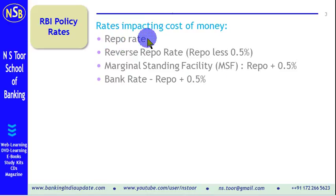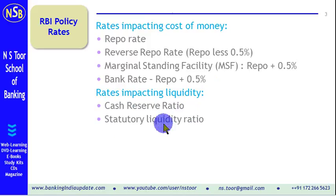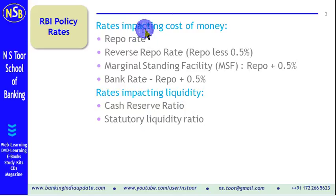So repo rate is the basic rate; reverse repo is repo minus 0.5%, and MSF and bank rate are both repo plus 0.5%. Liquidity is impacted by CRR and SLR. The rates of CRR and SLR are also changed by RBI according to requirement to impact the liquidity position. RBI keeps on changing these rates from time to time according to the economic and inflation situation.